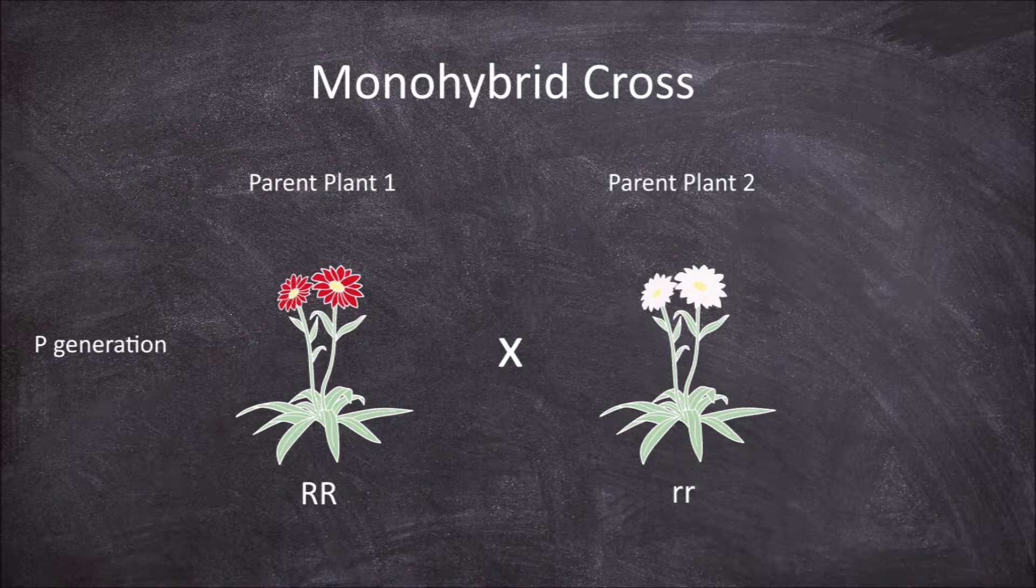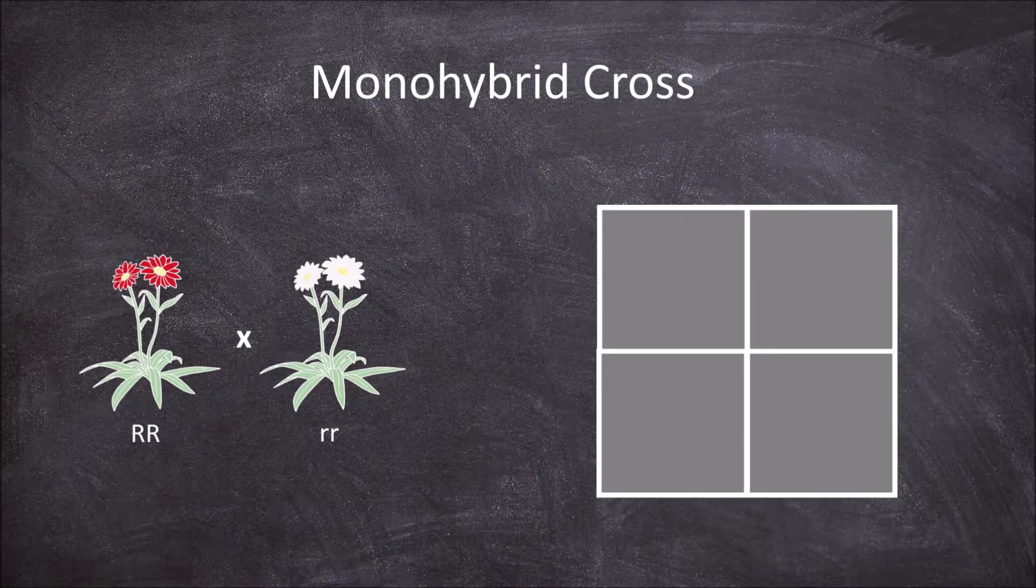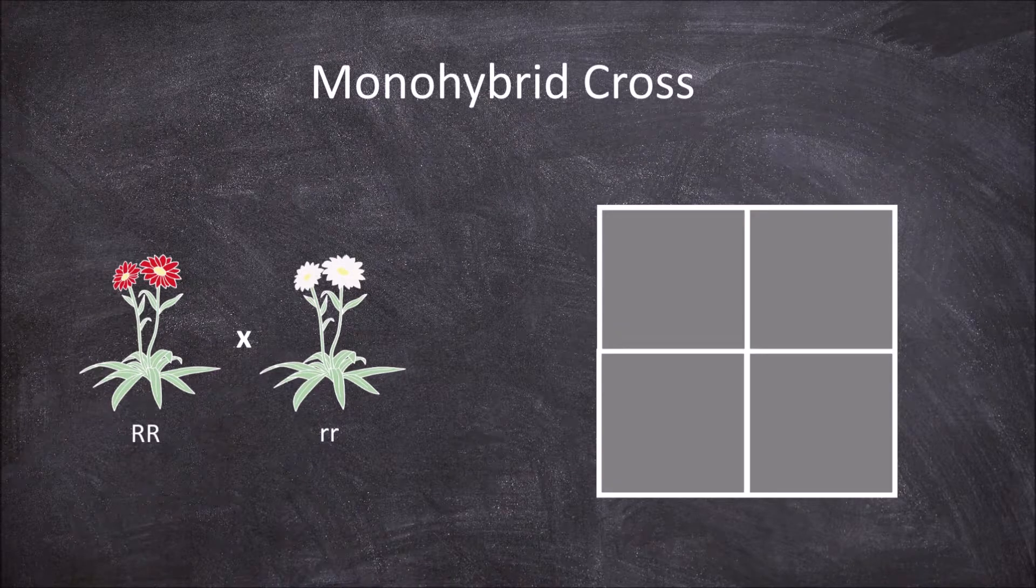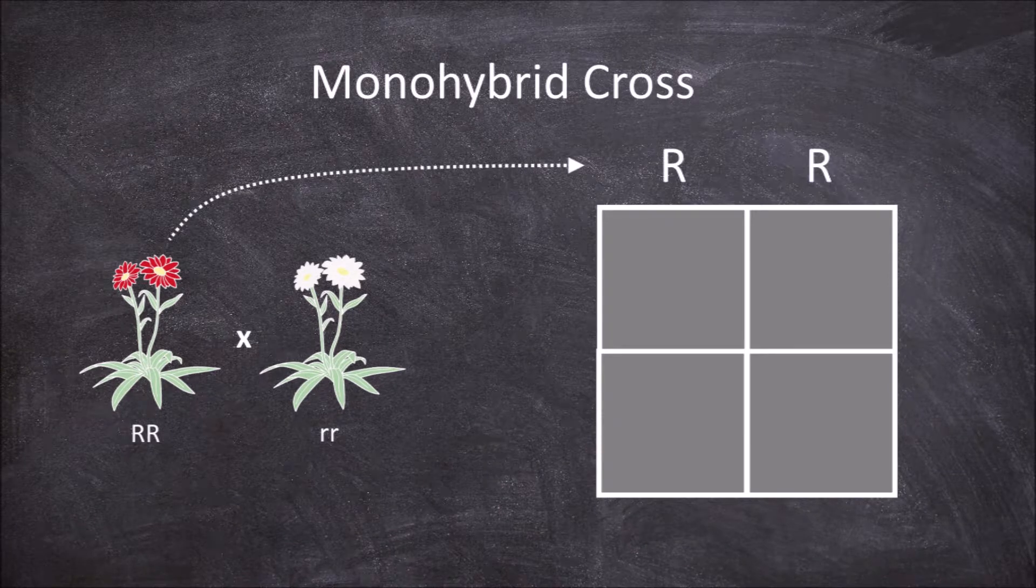This is when a Punnett square is utilized. For a monohybrid cross the Punnett square is going to be two by two and have four squares. You put the alleles for the first parent plant along the top of the square and the alleles of the second parent plant along the side.